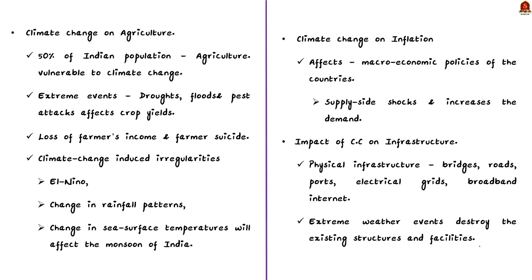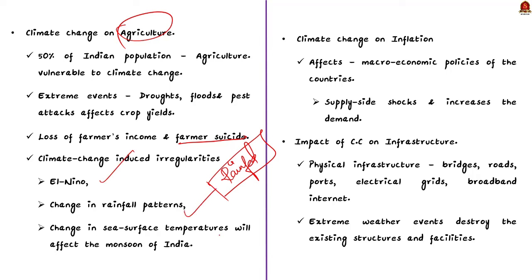Second, its impacts on agriculture. The agriculture sector employs almost 50% of India's population and is particularly susceptible to climate change. Extreme events like droughts, floods, and pest infestations will hamper crop yield, resulting in loss of farmers' income and may lead to farmer suicides. India's agriculture is largely rain-fed in nature, so climate change can induce irregularities like El Niño, change in climate patterns, and change in sea surface temperature — all of which can affect India's monsoon, which is our lifeline.